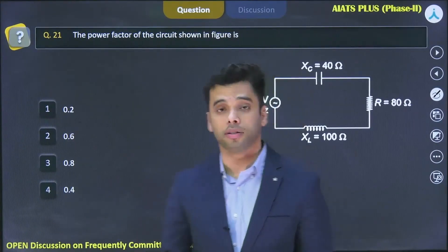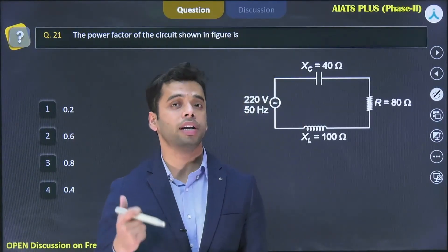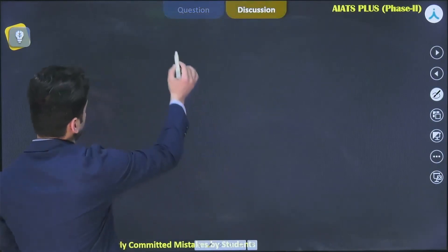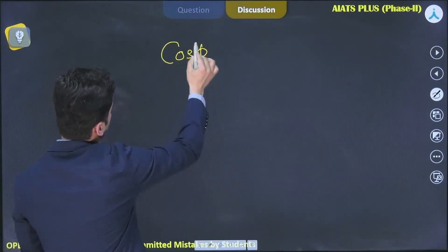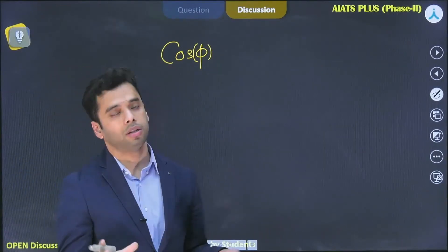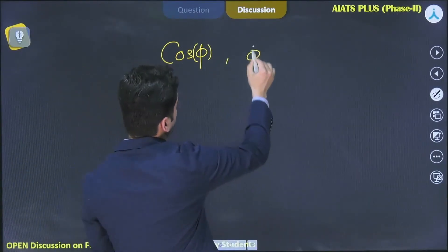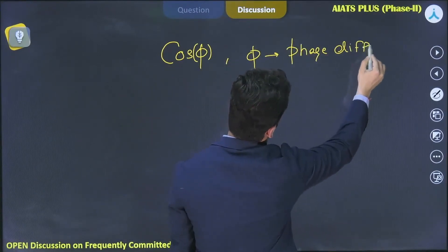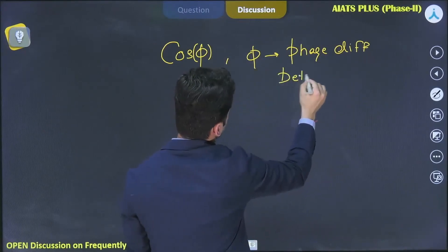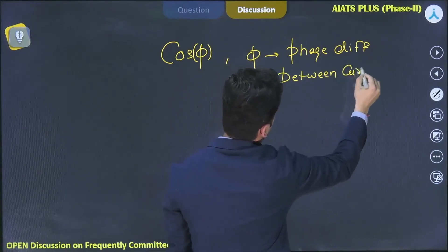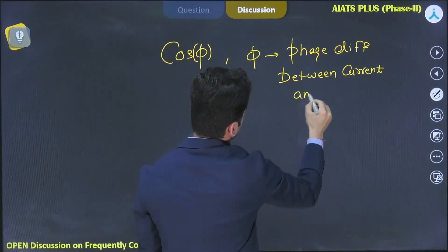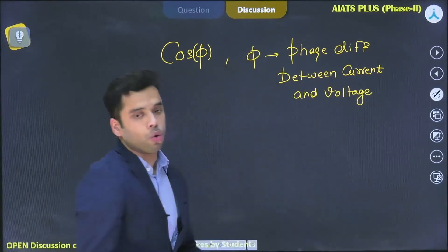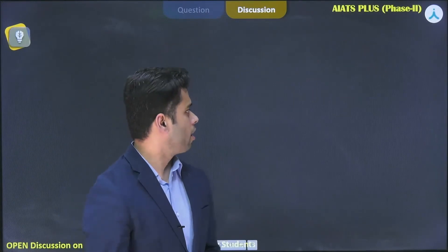The power factor of the circuit shown in the figure is to be calculated. Power factor is cos φ, which is known as the power factor, where φ is the phase difference between the current and the voltage.